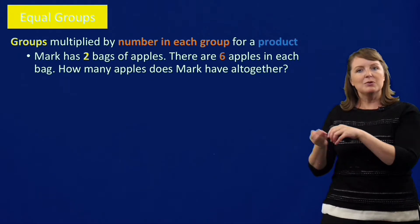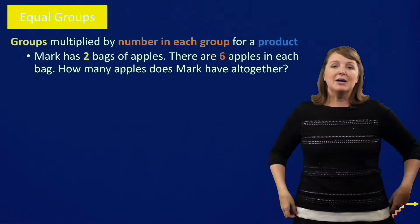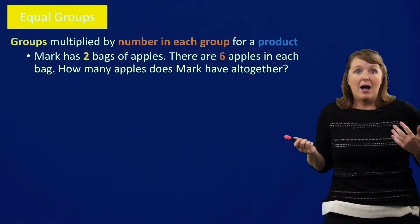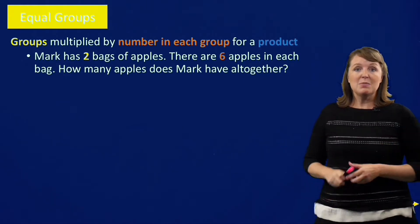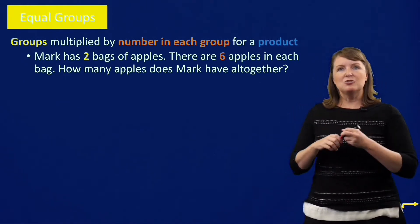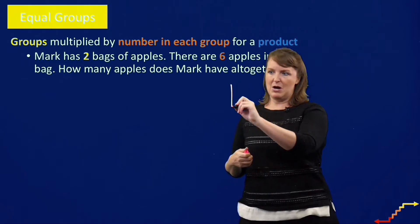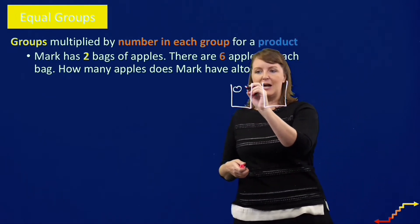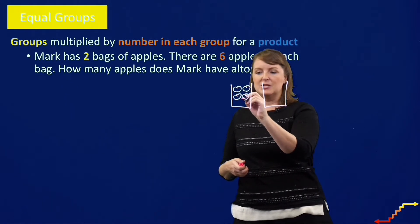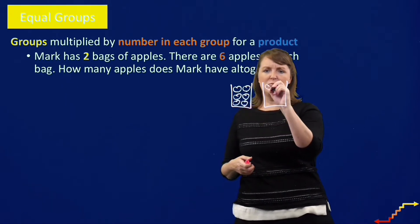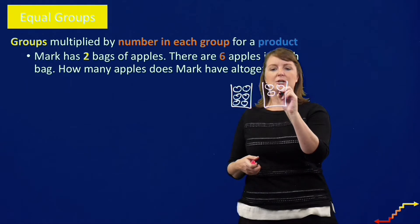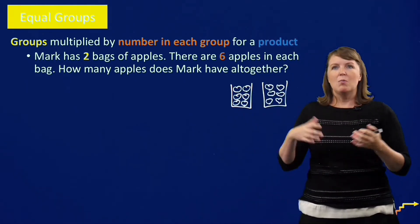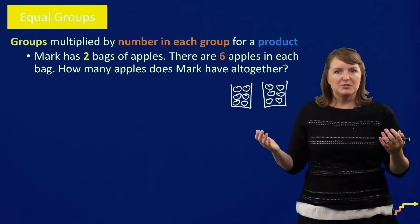Your classic equal groups story is this: Mark has two bags of apples. There are six apples in each bag. How many apples does Mark have altogether? I could draw this for students — Mark has two bags, and then there are six apples in each. I'll draw my apples quickly here. They kind of look like hearts, but they are meant to be apples. So the question is, how many apples does Mark have altogether?